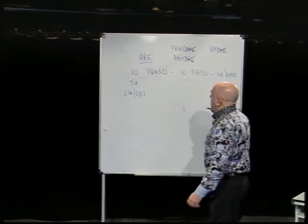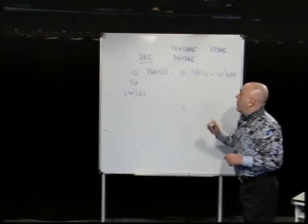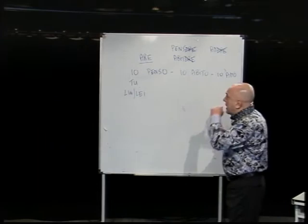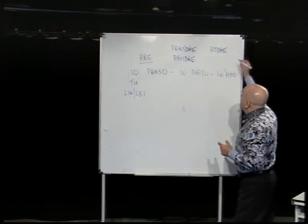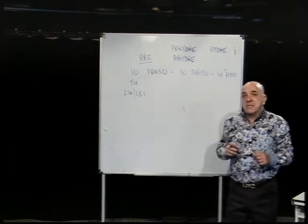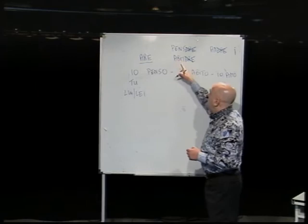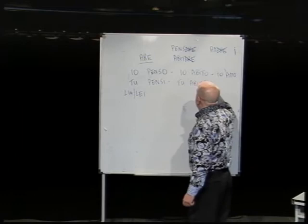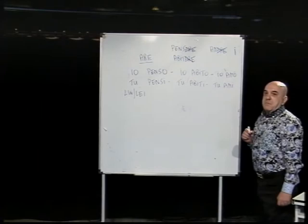When the subject is tu (you), you follow the same rule: remove the last three letters -ARE from the verb, but the letter you add is E. In Italian you pronounce it 'e'. So if you want to say you think, you live, or you like, you say: tu pensi, tu abiti, tu ami.